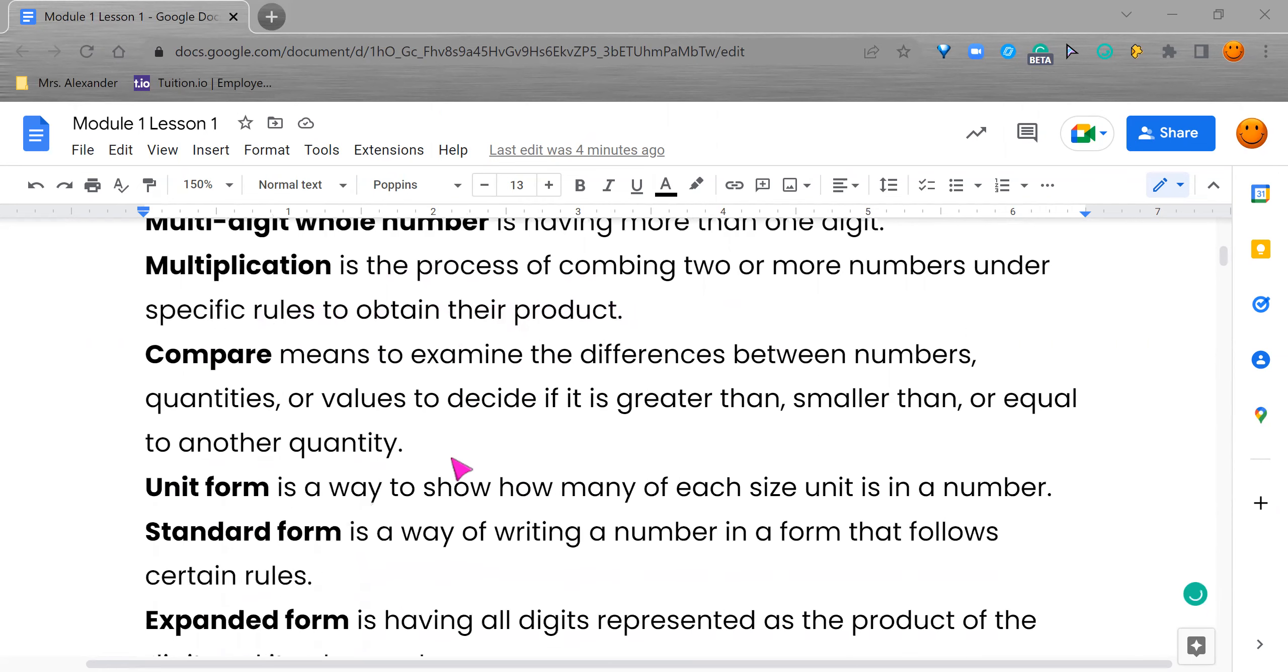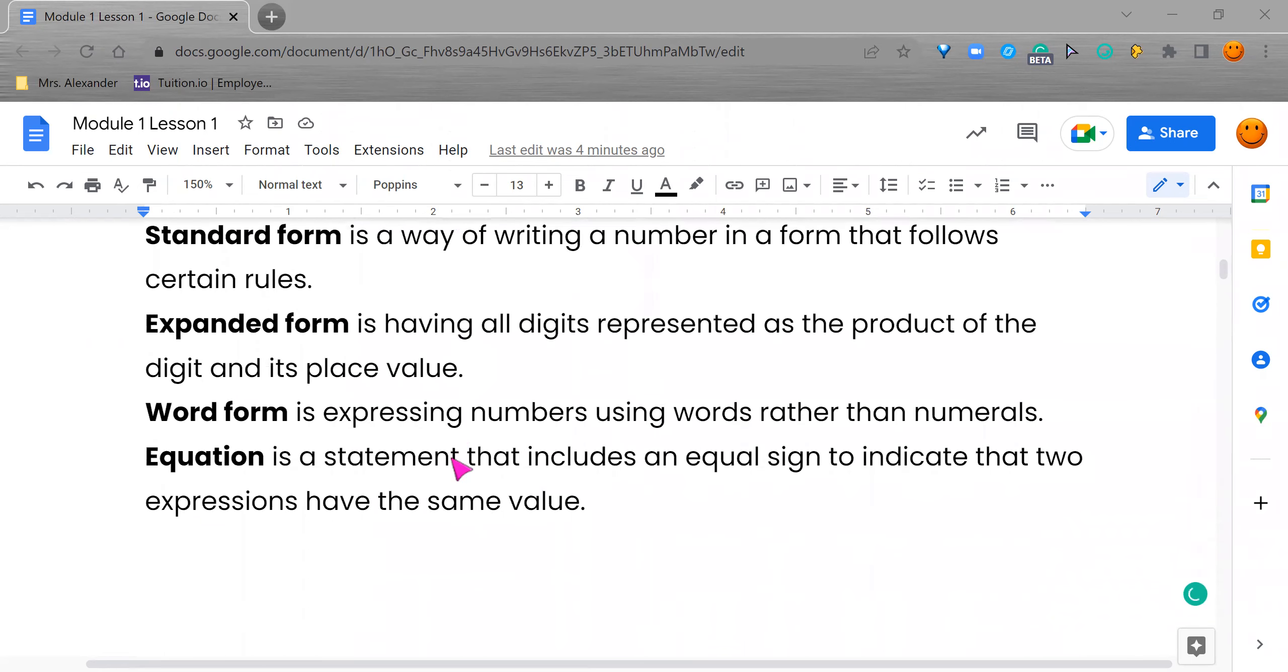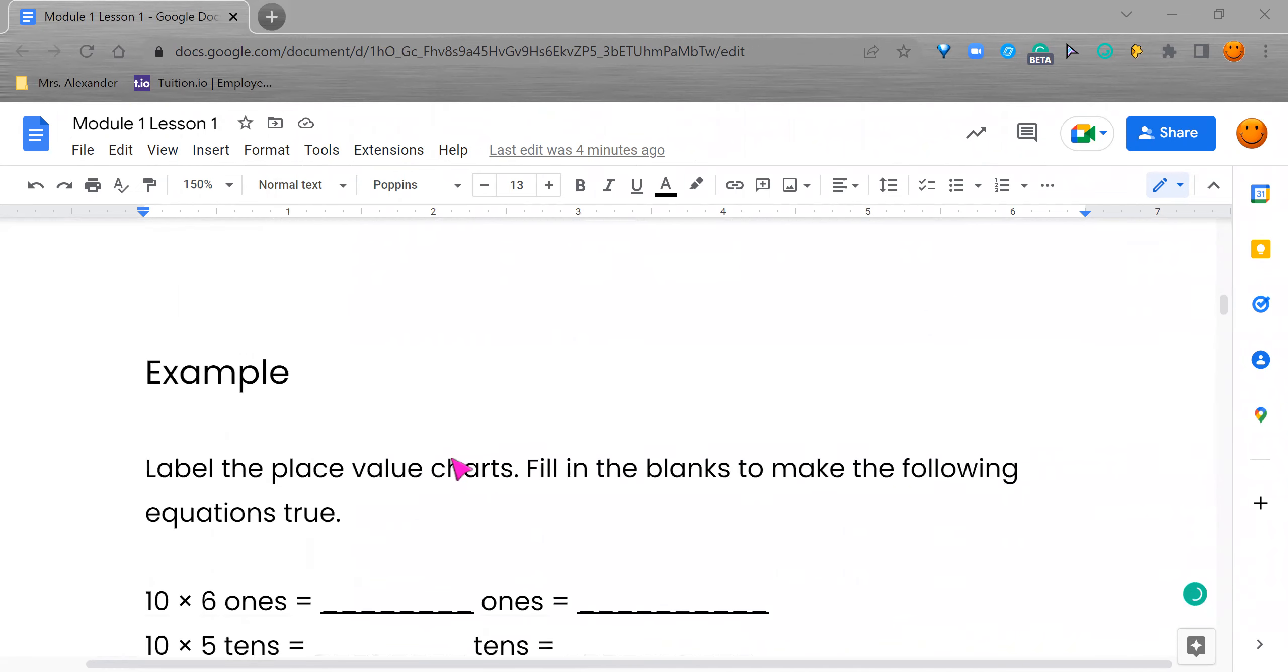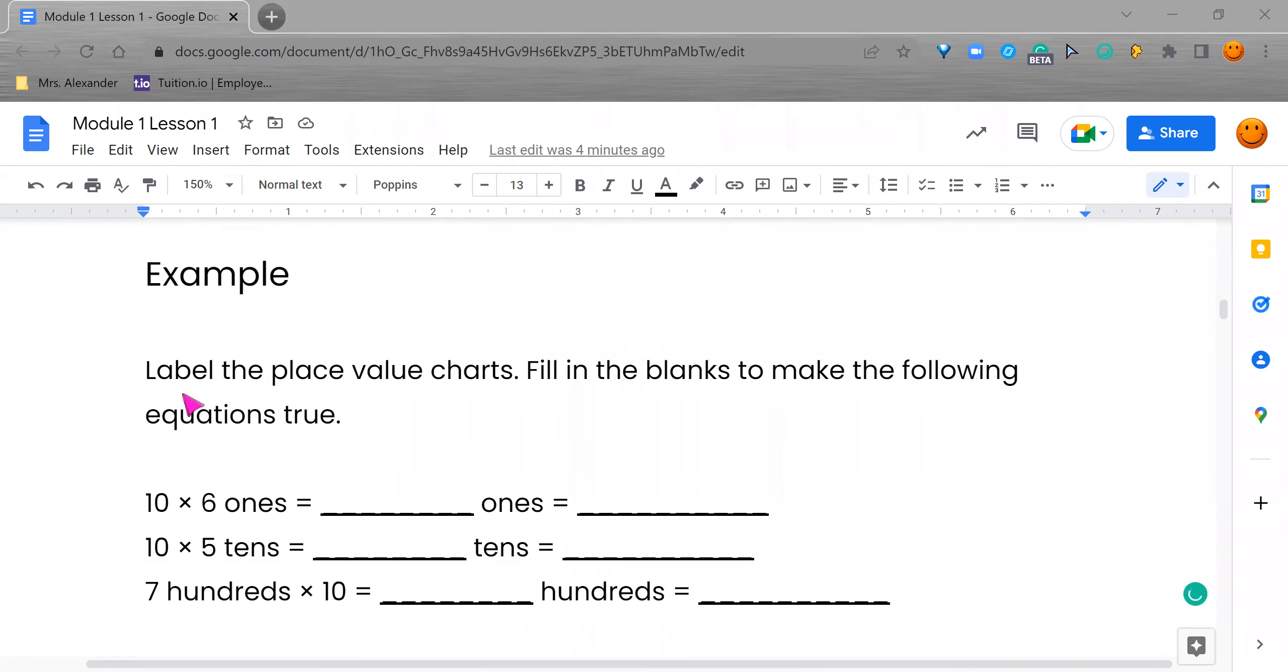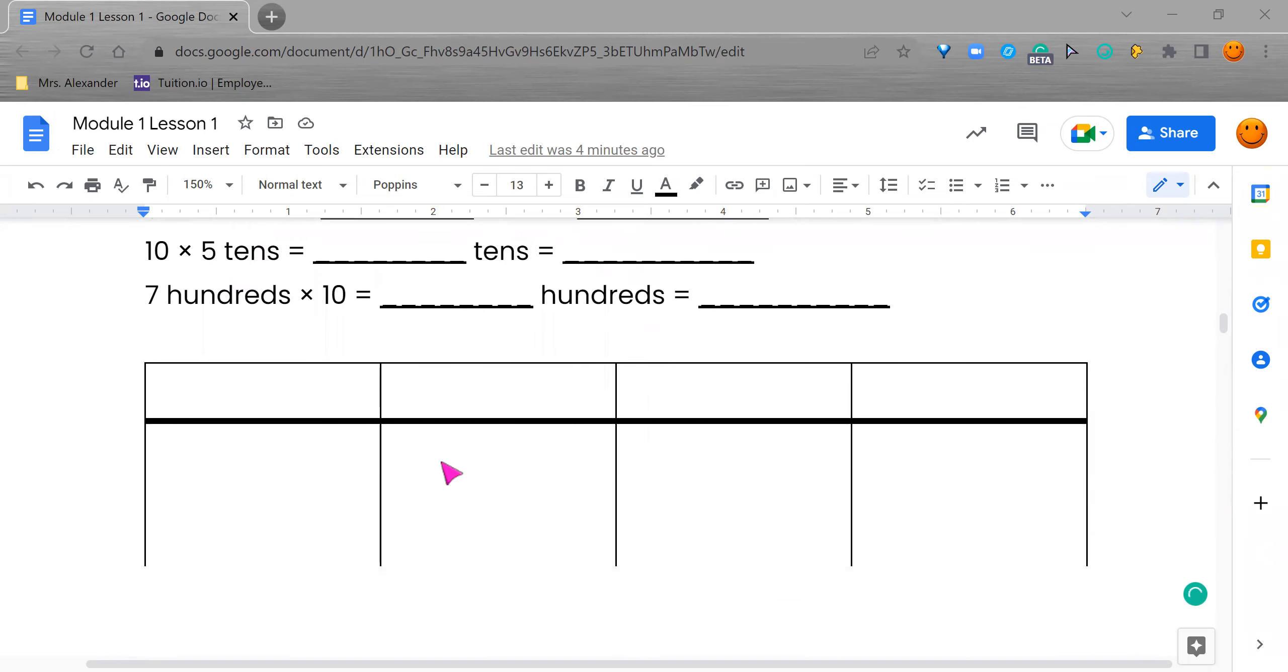So let's go down to our example. And yes, there's a lot of new vocabulary words we're covering this week. The directions tell us to label the place value chart. Fill in the blanks to make the following equations true. We have three equations. I have a place value chart and it says to label it. I see I have four boxes and now I've got to figure out where do I put what word. But I've got to think of the place value chart and remember that each number has a place value.